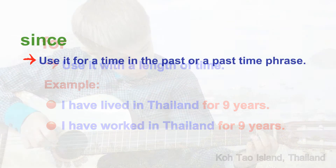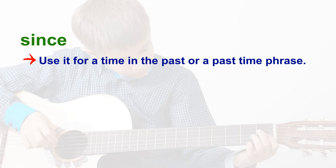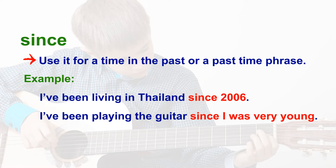When we use 'since', we use it from a time in the past or a past time phrase. For example: I've been living in Thailand since 2006. Or we may say: I've been playing the guitar since I was very young.